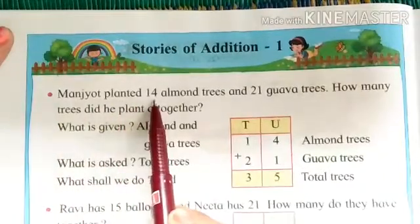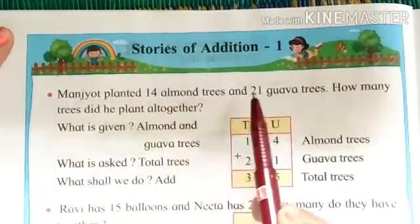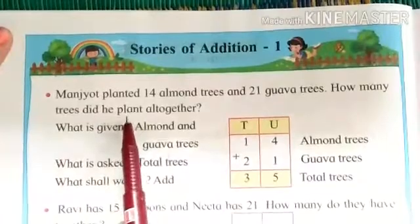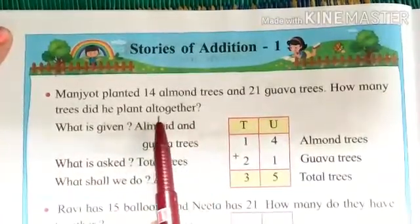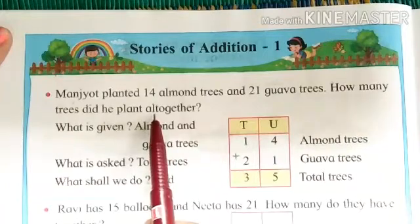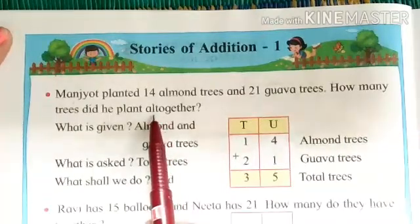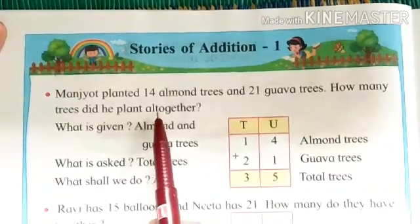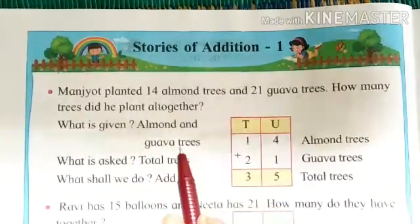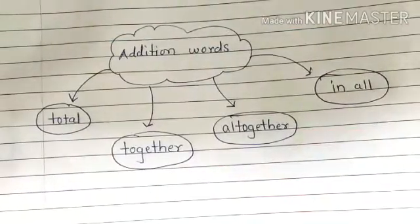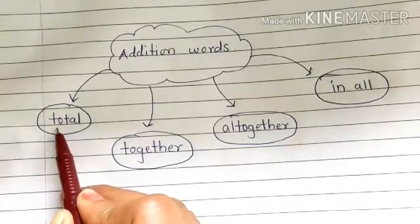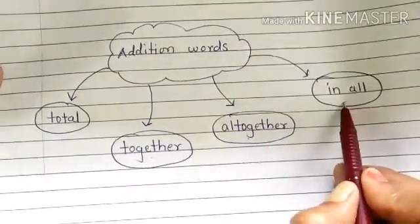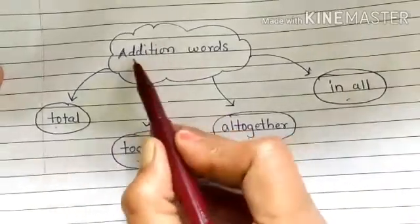Manjot planted 14 almond trees and 21 guava trees. How many trees did he plant all together? Now before starting to solve this word problem, I will give you some words by which words we have to recognize that we have to do addition. So here these are the addition words: total, together, all together, in all. These are the addition words.